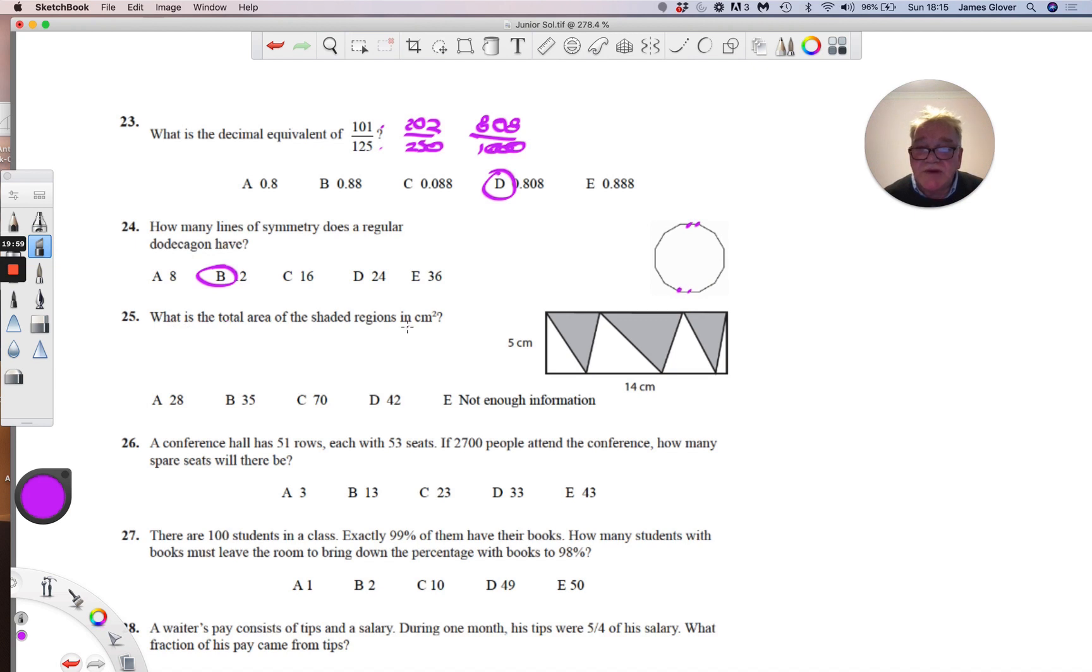The total area of the shaded section here, using half base times height, the height of all these triangles is the same. And so the total shaded region is half the whole, so it's five times fourteen divided by two, which is thirty-five square centimeters.